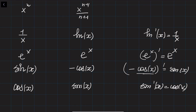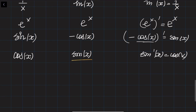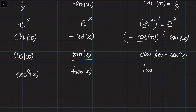The justification is always straightforward: take the derivative of the antiderivative and check that it equals the original function. For example, the antiderivative of secant squared of x is tangent of x, because the derivative of tangent equals 1 over cosine squared, which is secant squared.